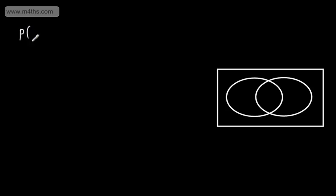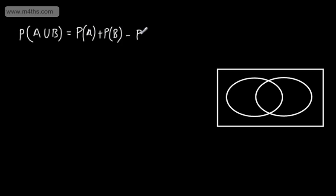In this video, we're going to continue our work with probability and look at using the formula to solve problems. The first formula is the probability of A union B is equal to the probability of A plus the probability of B minus the probability of A intersection B. We looked at probability of A union B and A intersection B in the last video.